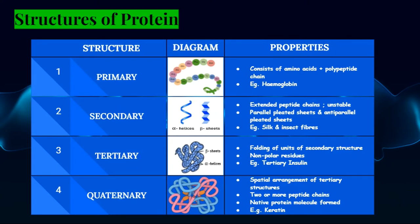Then we have quaternary structure. These are formed by two or more polypeptide chains of tertiary and secondary structures. These structures are formed when individual polypeptide chains interact to form a native protein molecule. Since hundreds of amino acids join together to form a protein, the quaternary structure is needed to form the native protein molecule. An example of quaternary structure is keratin.